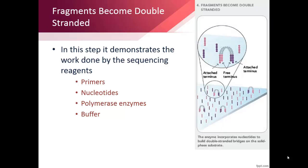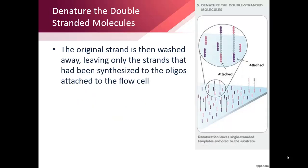The flow cell oligos act as primers, and a strand complementary to the library fragment is synthesized. The original strand is washed away, leaving behind the fragment copies that are covalently bonded to the flow cell surface in a mixture of orientations.